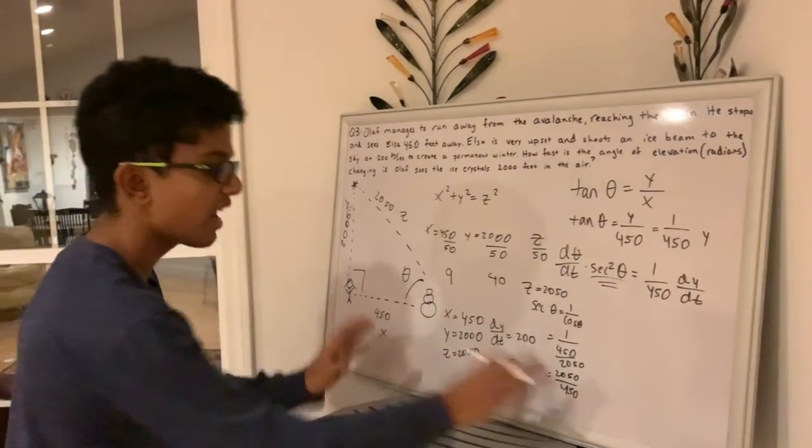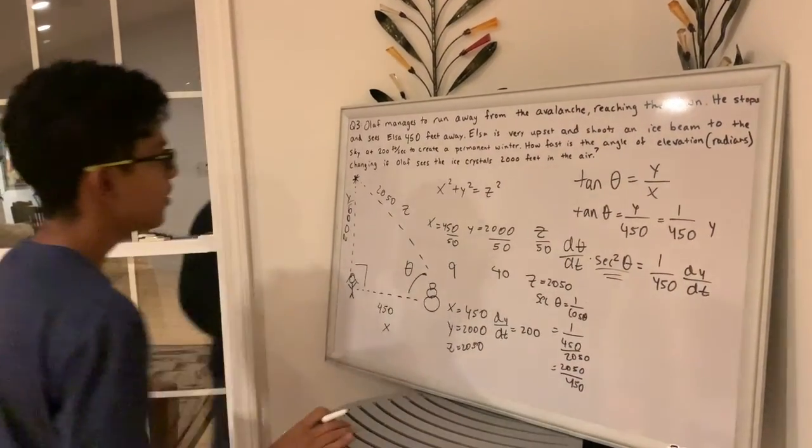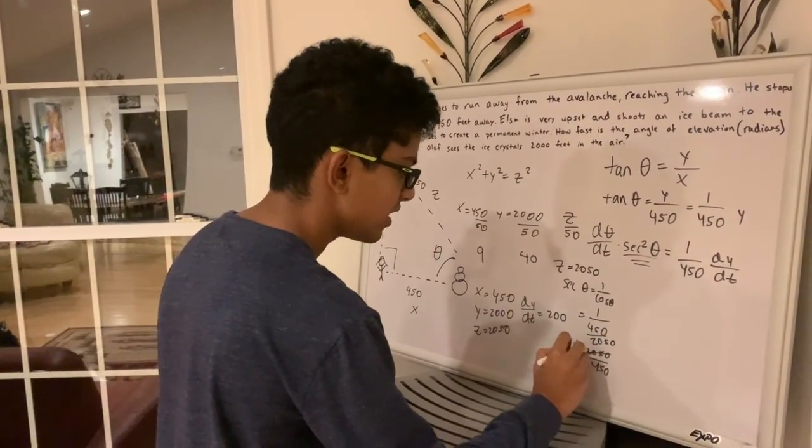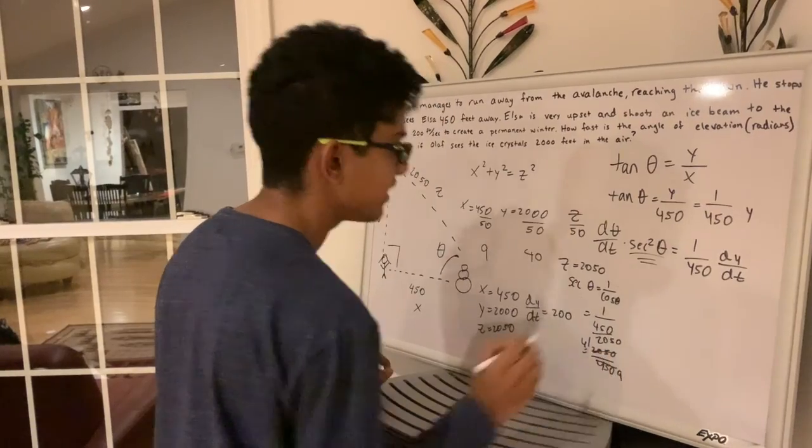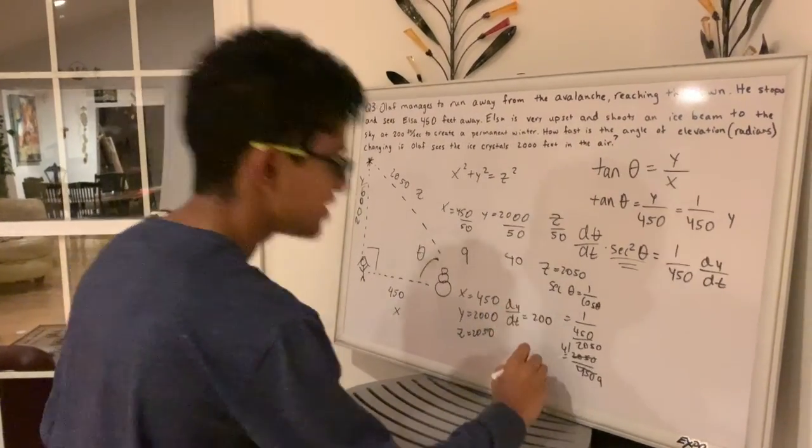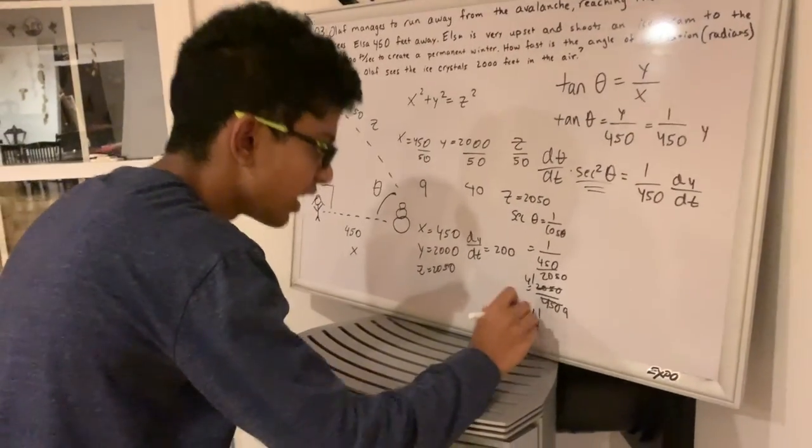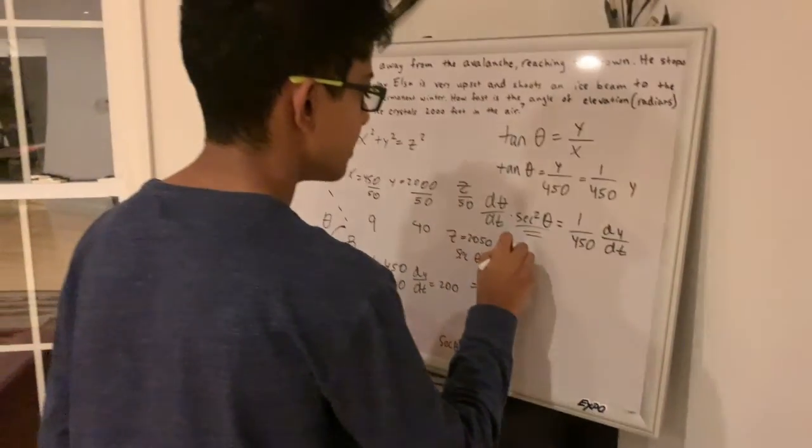Now trust me, you do not have to square that big of a number. We know that this triangle has been scaled up 50 times. So we can just divide these by 50. So you will get 41 and you'll get 9. So that means your secant theta is 41 over 9. Now you plug that back into the equation.